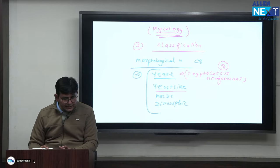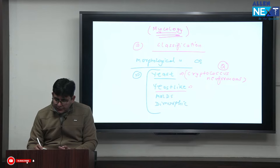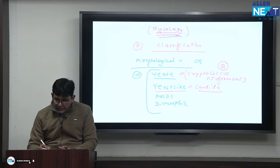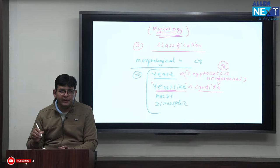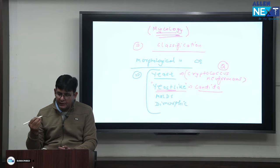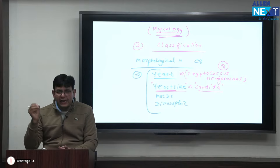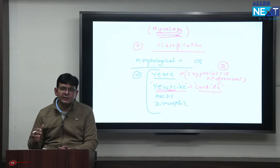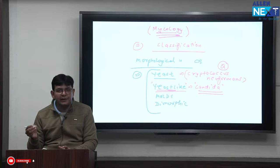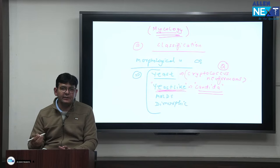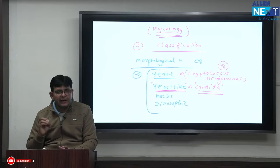The yeast-like category is Candida. Candida is in oval-shaped structure but can have pseudo-hyphae and true hyphae. This was asked in the last FMG exam — which organism can show all forms: hyphae, true hyphae, budding yeast cells, and yeast cells? The answer is Candida, which is why it is termed yeast-like.